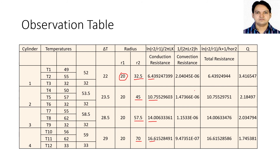The convection resistance is decreasing: from 2.6×10⁻⁶, it decreases to 1.4, then 1.15, and 9.4×10⁻⁷. The total resistance — which is the sum of conduction and convection resistance — is 6.4, then 10.7, then 14.0, and 16. So as you go on increasing this radius, total resistance increases and therefore heat transfer decreases: 3.41, 2.18, 2.03, and 1.8.